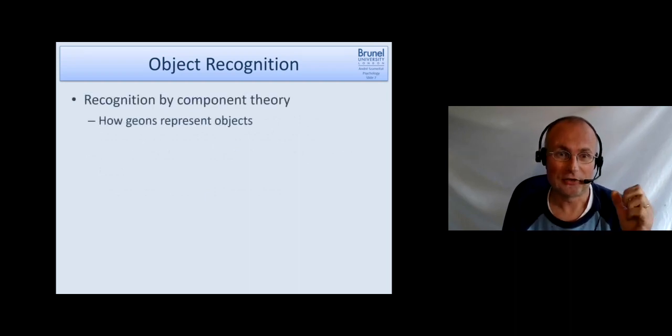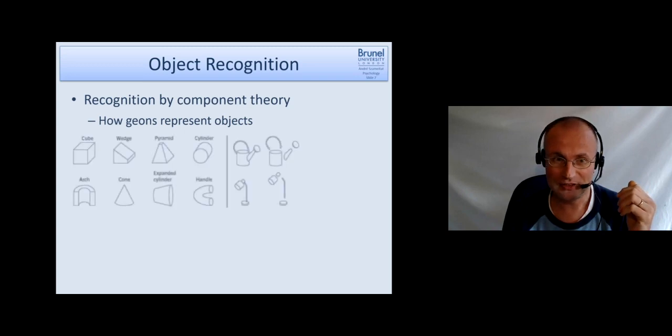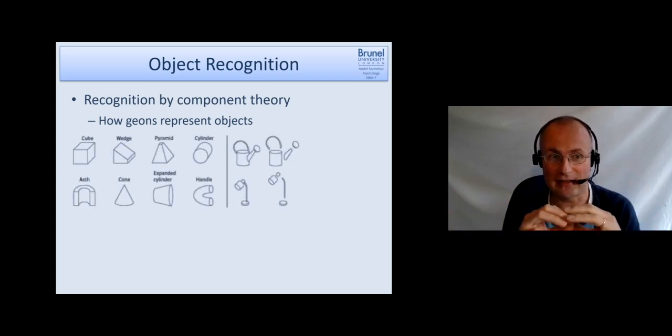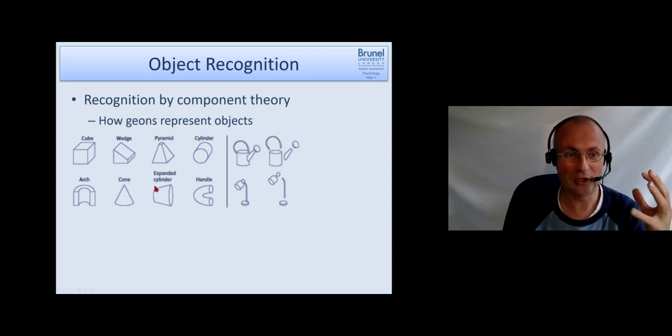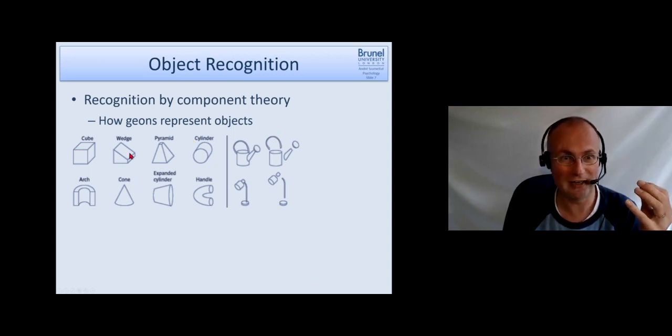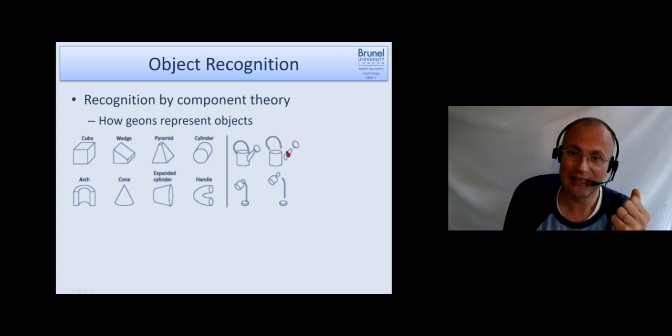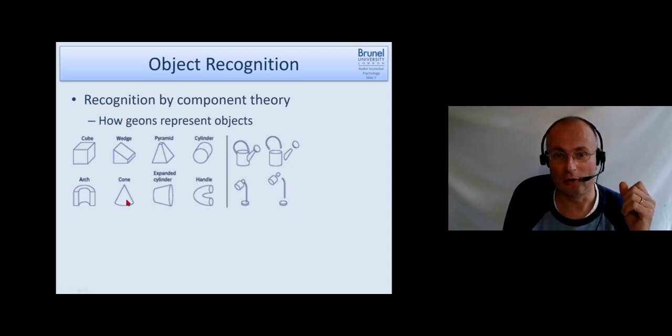Let's have some example of that. He proposed there are 36 different geons or primitives he called them as well. Okay so these geons represent objects by combining them. These are examples of the geons or primitives like a cube or a wedge or a pyramid or a cylinder like Marr used.